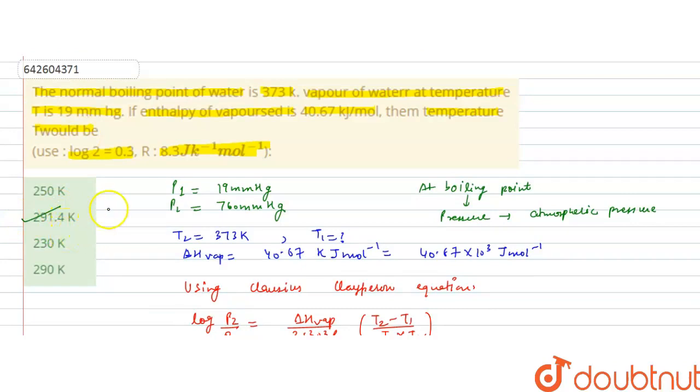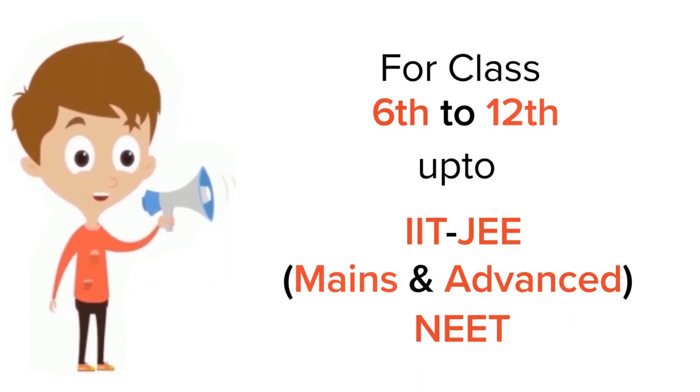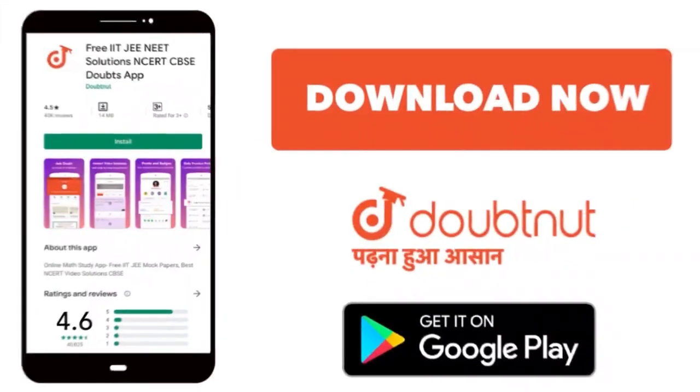I hope you understood the solution. Thank you. For class 6 to 12, IIT-JEE and NEET level, trusted by more than 5 crore students. Download Doubtnet app today.